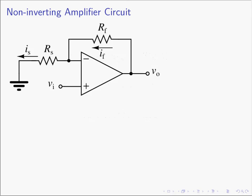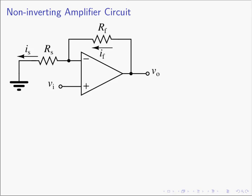So let's just dive right in. This is the non-inverting amplifier circuit, and the goal here in this derivation is to discover what is the output voltage, Vout, in terms of the input voltage Vn. In this case we see the Vn voltage is connected to the non-inverting terminal.